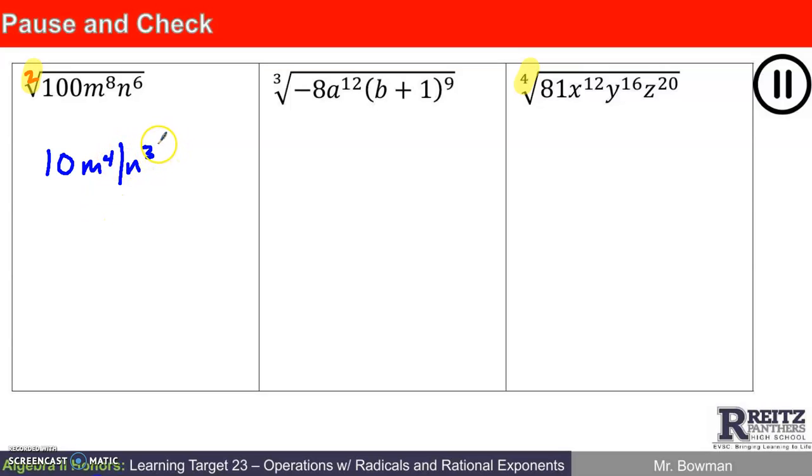Presto. There we go. 10 m to the 4th times the absolute value of n to the 3rd. That'll only come into play when you've got an even index in the original problem, and the result is something with an odd power.